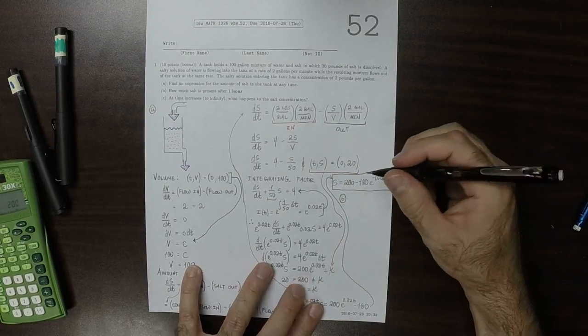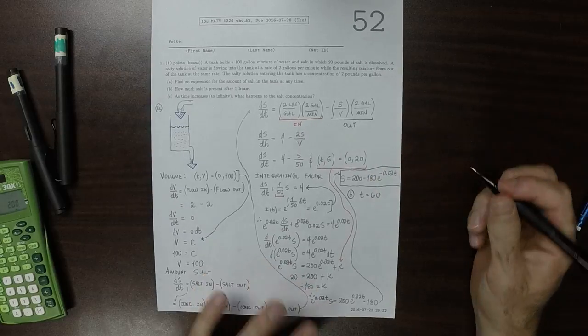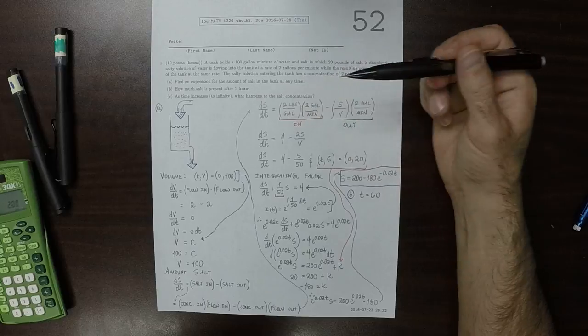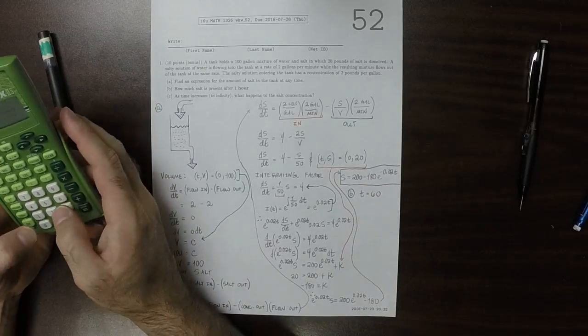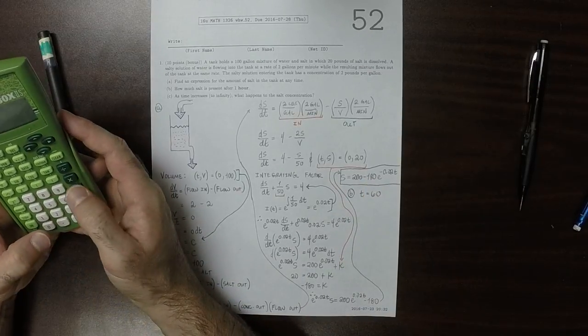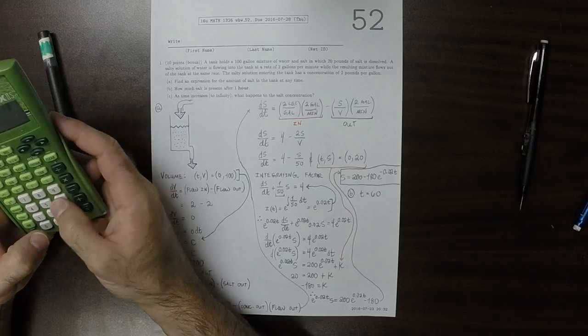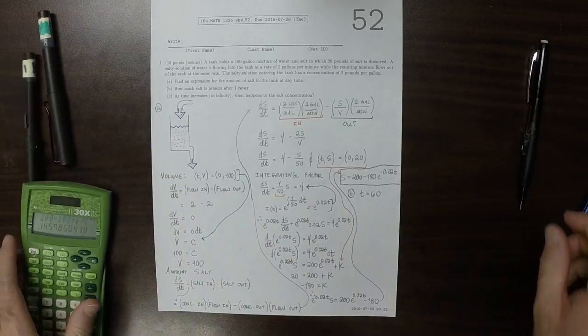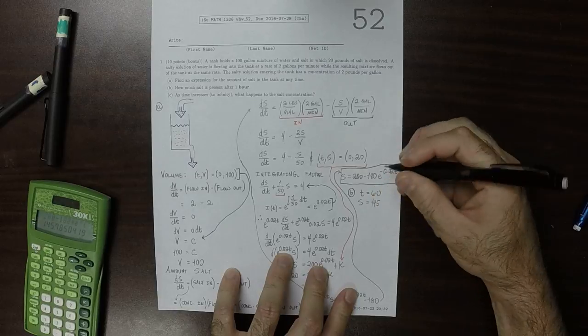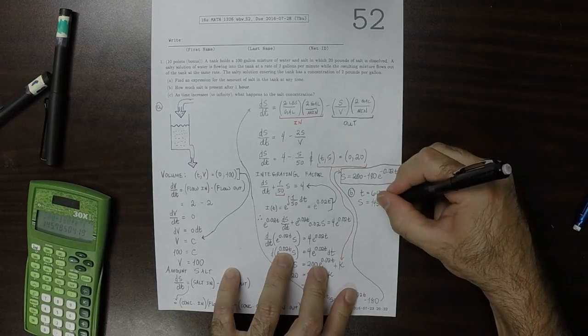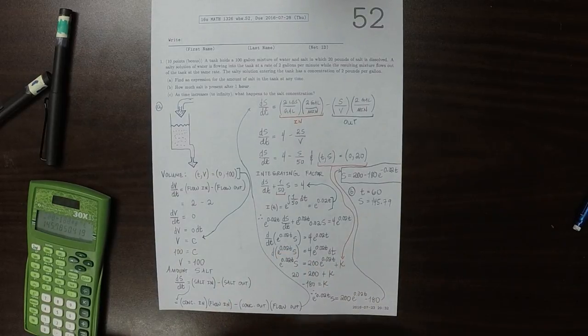So for part B, what's being asked is what about when t is 60? So the reason why it's t is 60 is because all of this is measured in minutes, and 1 hour is 60 minutes. So plugging in t is 60 into this equation, it's 200 minus 180 times exponential of negative 0.02 times 60. So then at that point, we get S is 145.79 to two places past the decimal. So there would be 145 pounds of salt in the tank.